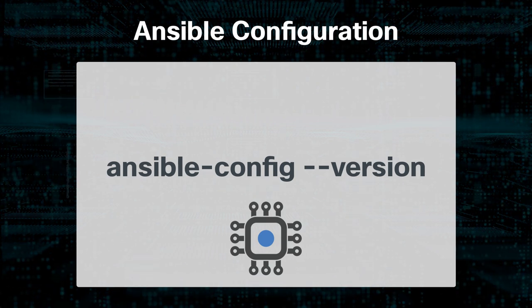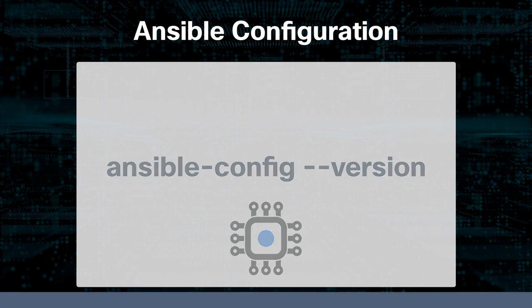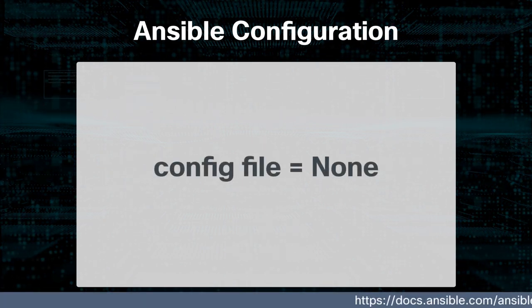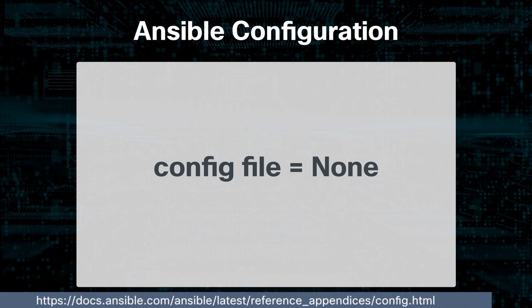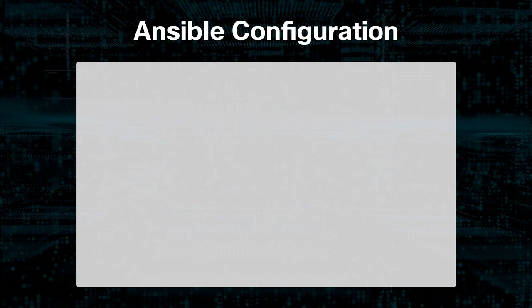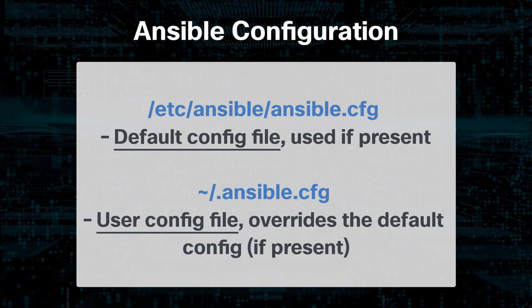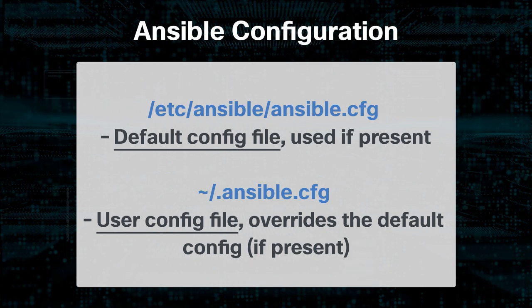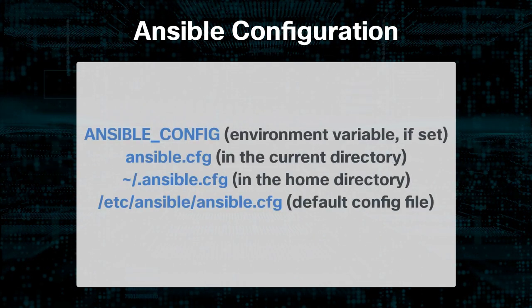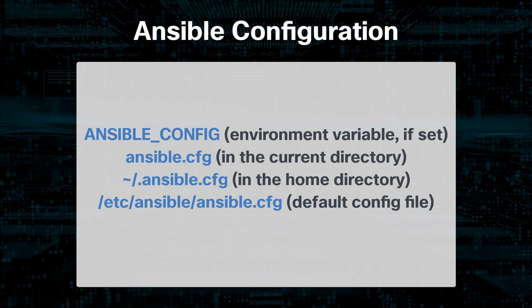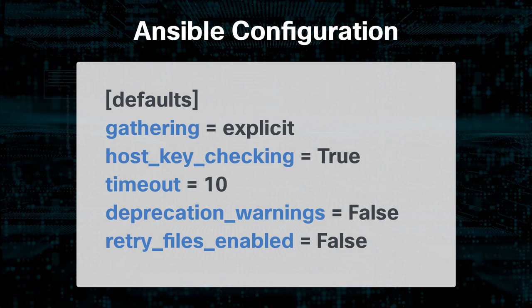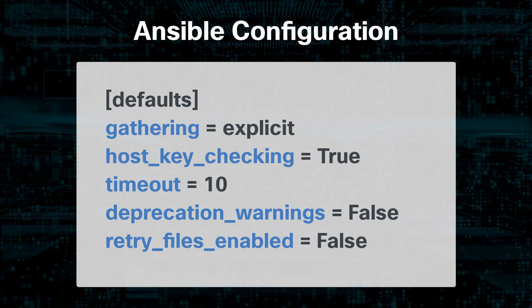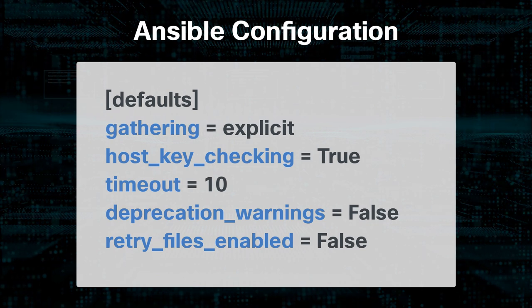The ansible-config utility allows users to see all configuration settings available, their defaults, how to set them, and where their current values come from. One of the first things you'll see in the results is the location of the config file. For a new install, the results may show config file equals none. The config file is found in one of two places usually — the default config file or the user config file. A very basic config file can include SSH keys, remote users, and roles.